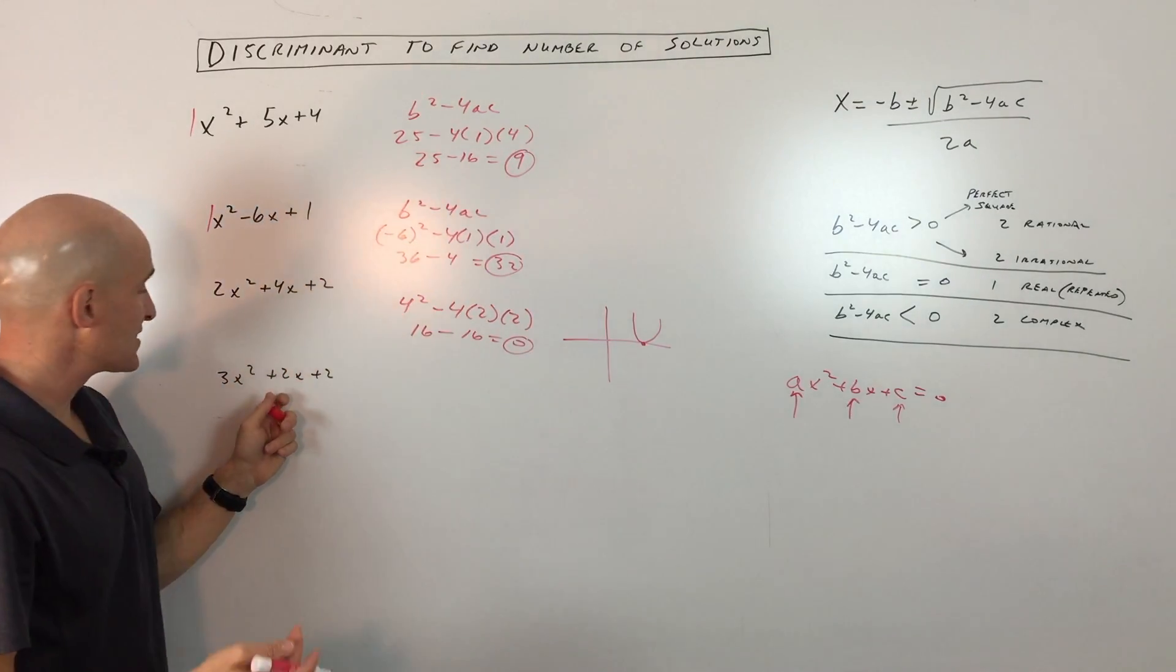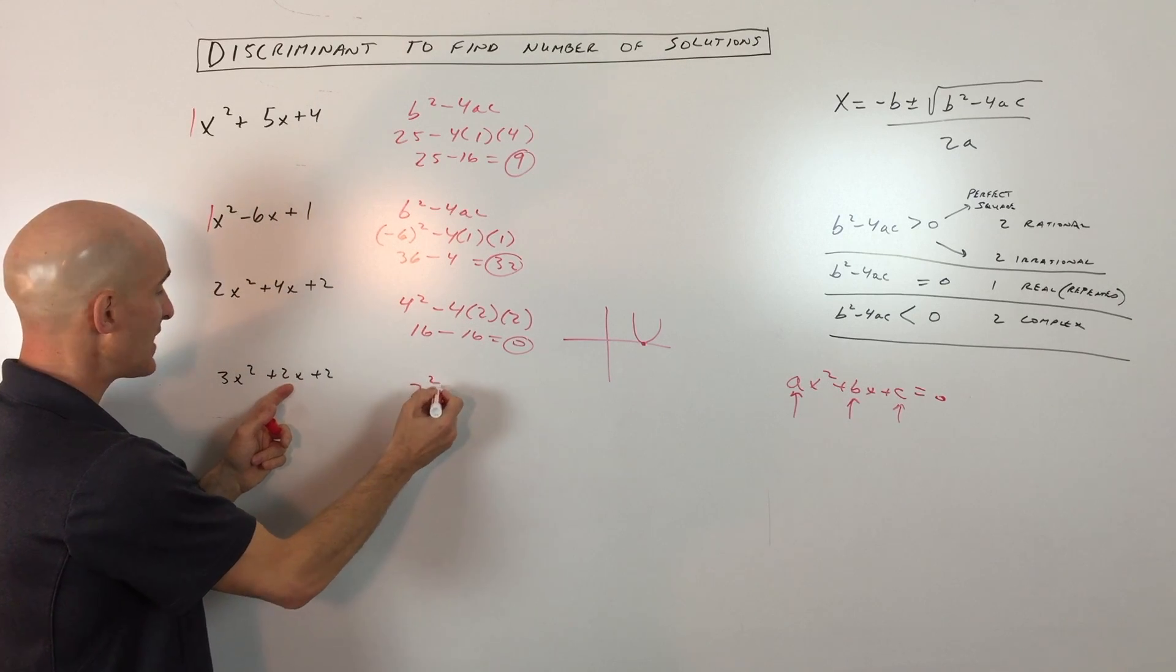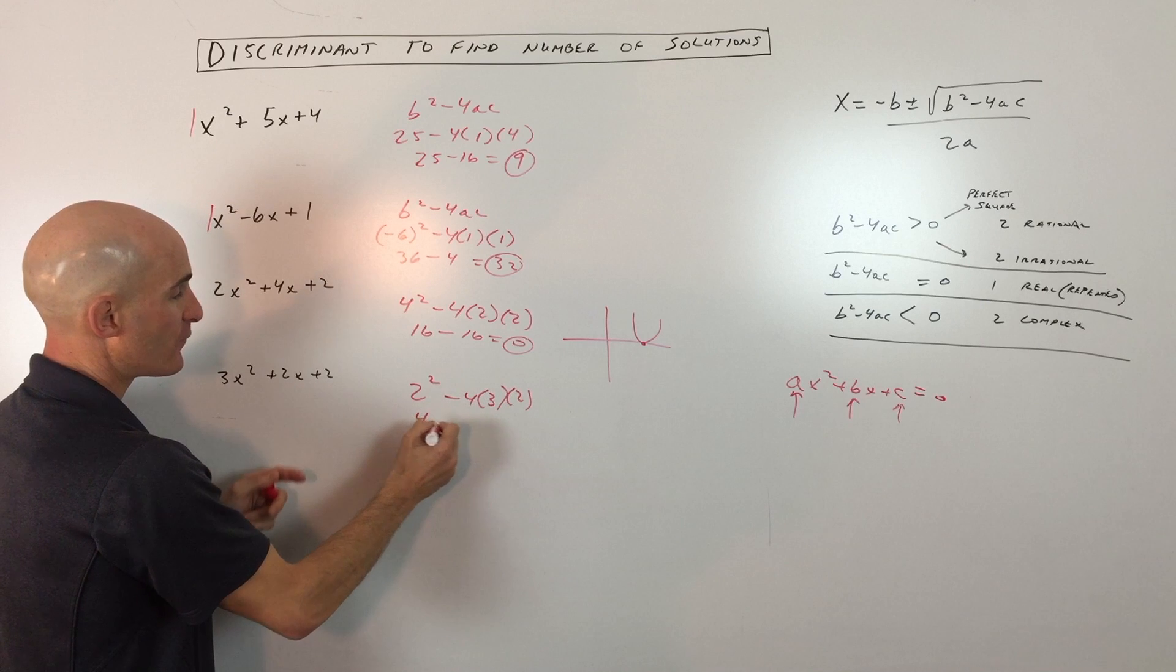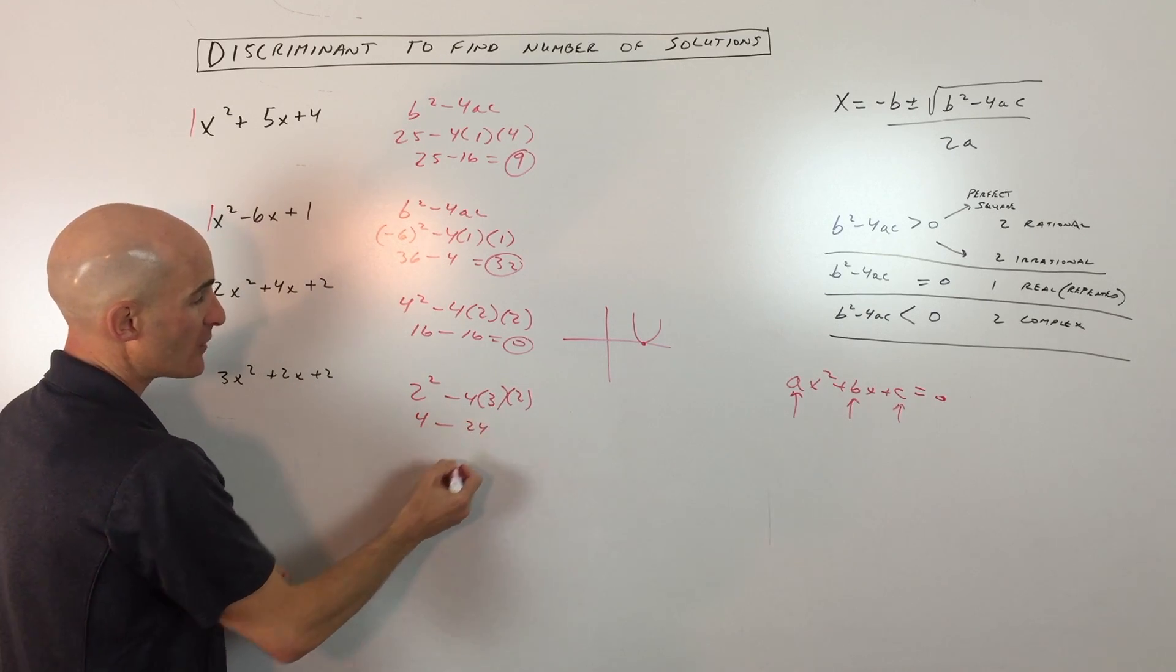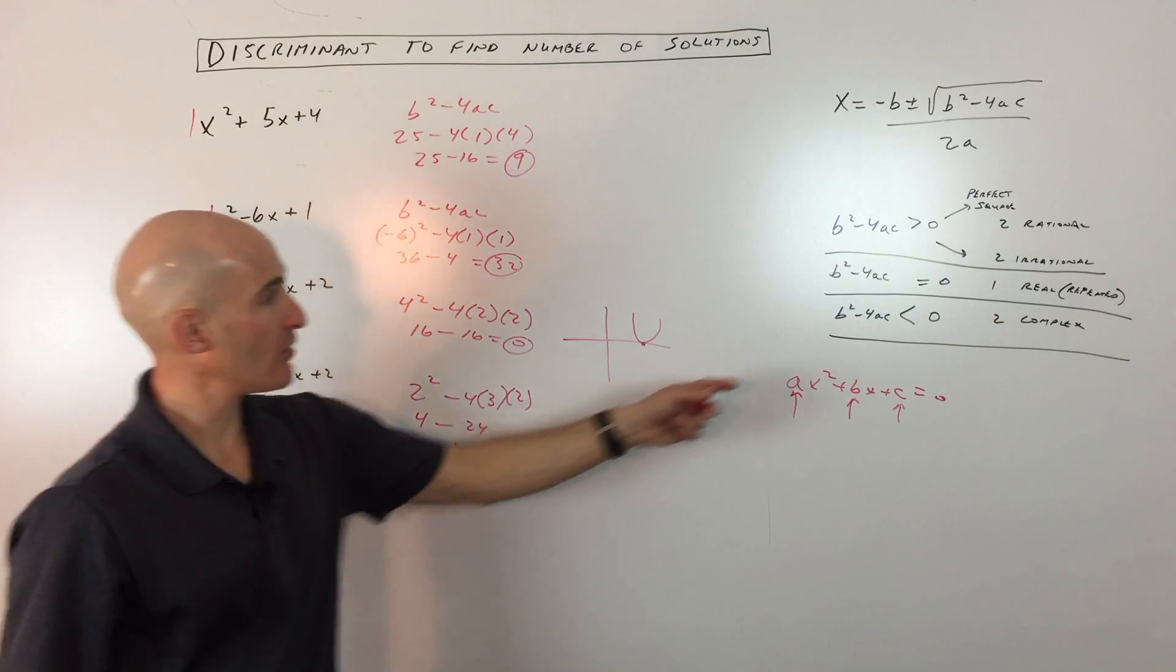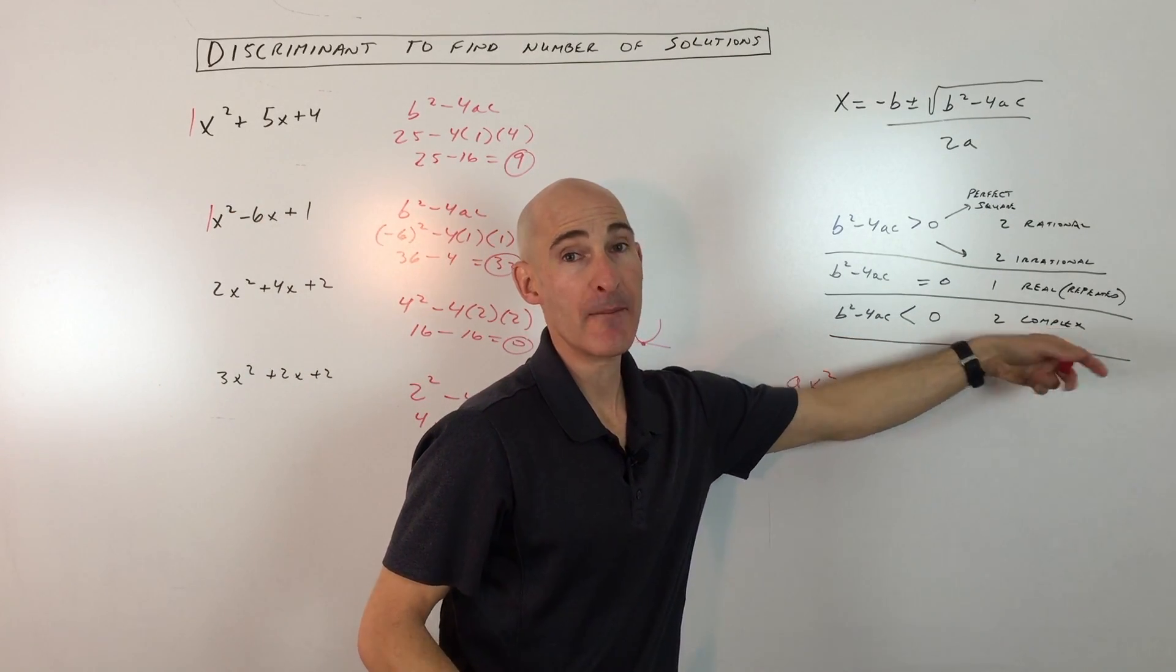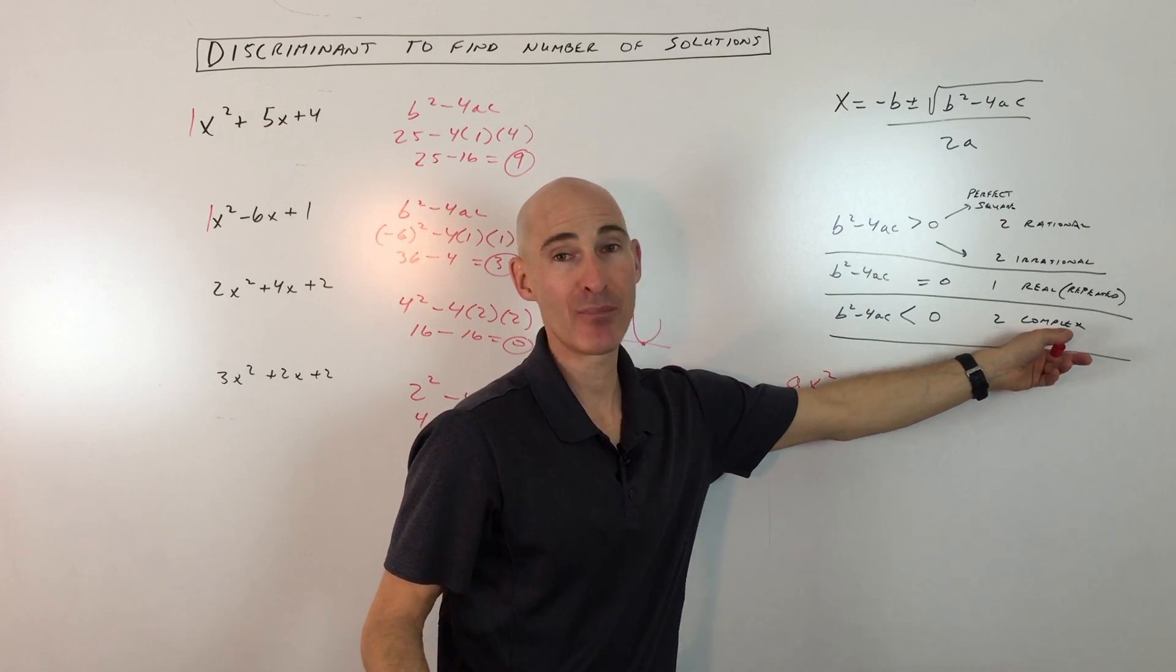So then the last case here, we're going to do b squared minus 4ac again, so 2 squared minus 4 times 3 times 2, that's 4 minus 24, which gives us a negative 20. Now notice this is less than 0. That's this last case here, which means that we're going to get two imaginary solutions, or what you call complex solutions.